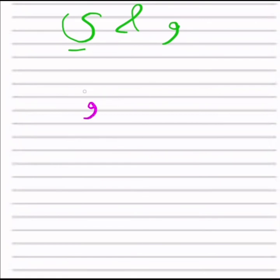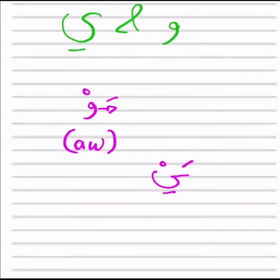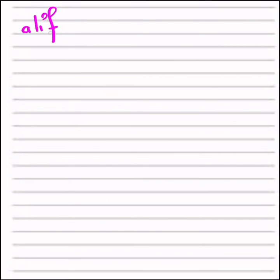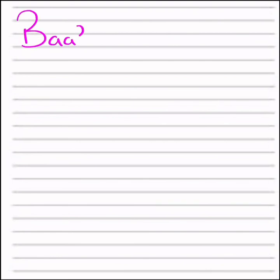We also covered the sukoon for Waw and Ya. Any Waw with a sukoon, preceded by a letter with a fatha, is pronounced as 'aw.' Any Ya with a sukoon, preceded by a letter with a fatha, is pronounced as 'ay.' We also covered how to write and read the letter Alif — a non-connected letter with three vowel sounds: 'a,' 'u,' 'e.' It doesn't connect on its left side, so you write it alone at the start, and it stays separate in the middle and end as well.